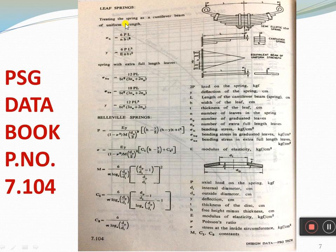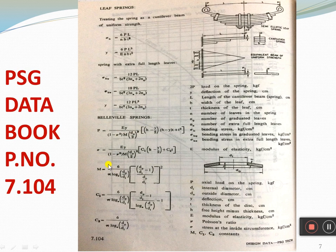Next is the leaf spring. To solve a leaf spring problem, treat the spring as a cantilever beam of uniform length. The bending stress σb and deflection can be found from the formulas provided. For springs with extra full-length leaves, additional σb formulas are available. The axial load P on the spring can be found using the given equations, where constants C1 and C2 are used. The stress at the inside fiber is also covered. All these formulas are available on page number 7.104, which is specifically for leaf springs. Pages 7.101, 7.102, and 7.103 are for helical springs.